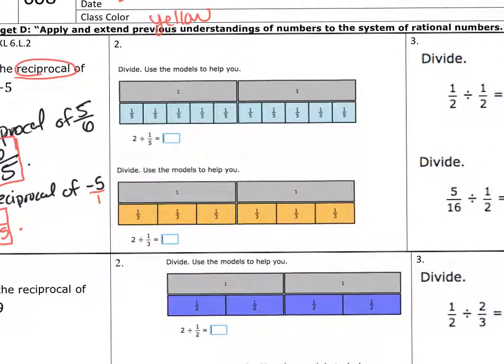So number 2 says divide, use the models to help you. So here we have two whole numbers. So we have 2, and 2 is represented here in two tape diagrams. And then it wants to be divided into fifths. So in each one, we have 1, 2, 3, 4, 5, 6, 7, 8, 9, 10. So you count how many times, how many one-fifths you have into two wholes. So 2 divided by 1/5 is 10.